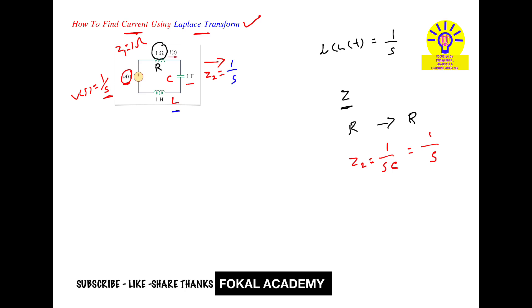Next for the inductor, let's consider it is Z3. Z3 equals SL. This is the impedance for the inductor. S times L, where L is 1, so Z3 is S.